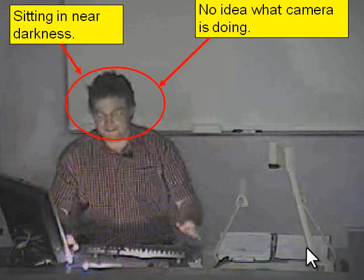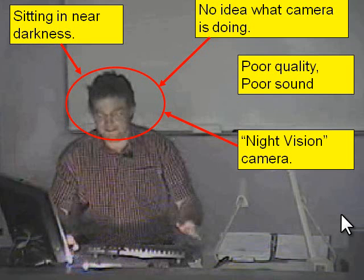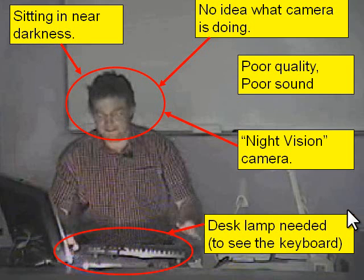I've got no idea what the camera is doing. The operator for the camera is in another room and I don't have a clue — is it on me, is it on my slides, is it on the document camera? There's poor quality and very poor sound as well. It looks like a night vision camera is being used because the quality is so bad. I've actually had to bring a desk lamp in with me so that I could see the keyboard — you can see the circle there, a desk lamp, so I can use the keyboard during the lecture.